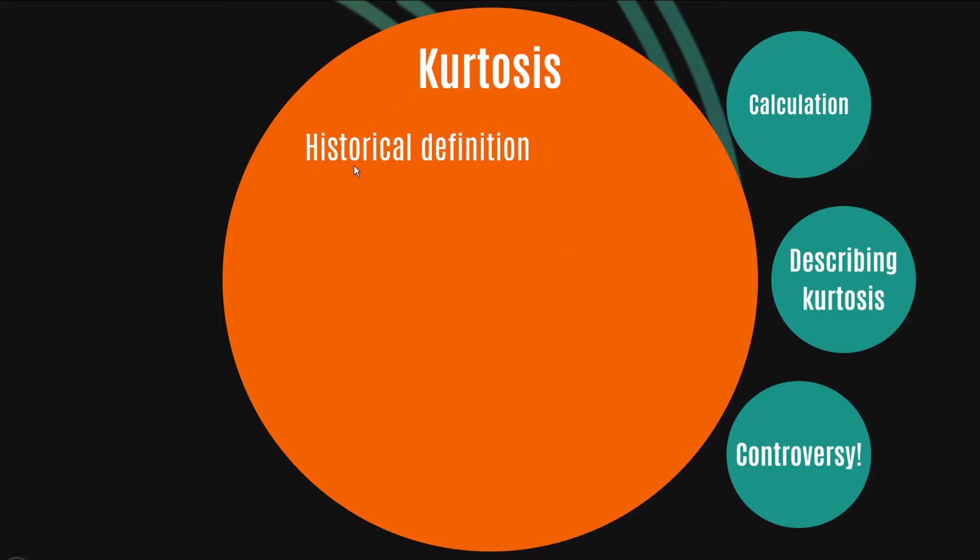All of which you can find up on zstatistics.com. So here we go. I'm going to give you the definition of kurtosis as it was historically given, and then we'll look at how it's calculated and also how to describe various distributions in terms of its kurtosis, and finally we'll look at that controversy.